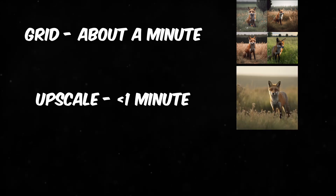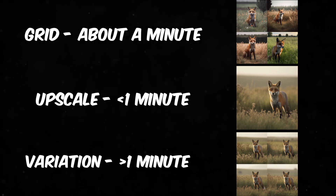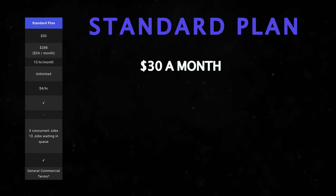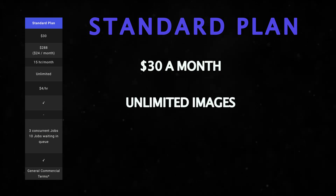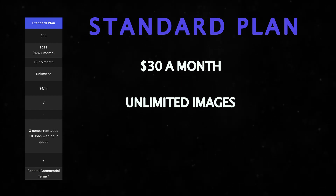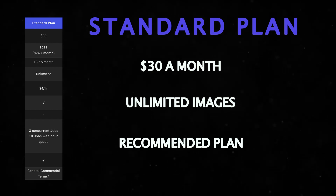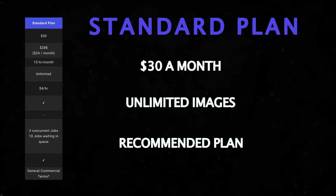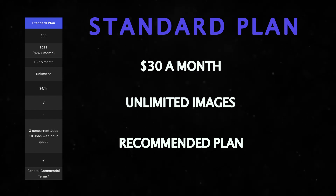Generating the grid the first time takes just about a minute. Upscales take a little more than a minute and variations take a little less, so in the end it averages out. The next level up is their standard membership, which is really an unlimited plan with 15 GPU hours of priority generations and then as many relaxed generations as you want if you're willing to wait. This is the one that I chose, and if you're interested in really diving into AI art and want to find your style, having this plan for a month or two is most definitely worth it.